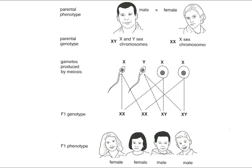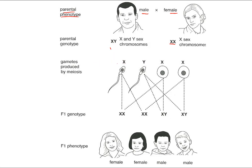This is how you determine whether someone is male or female. The parental phenotype is male crossed with female. The parental genotype — because he's male he's XY, and because she's female she's XX. The father can make sperm containing an X chromosome or a Y chromosome, because his pair XY must split up, producing one gamete with X and one with Y.